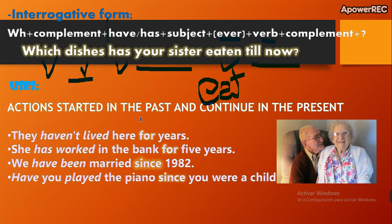When do we use the present perfect? Actions that started in the past and continue in the present. For example: They haven't lived here for years — ellos no han vivido aquí por años. In the past they stopped living there, and up to now they still don't live there. So: They haven't lived here for years.